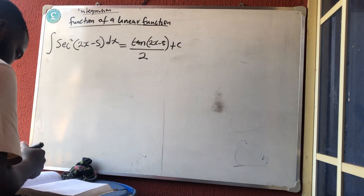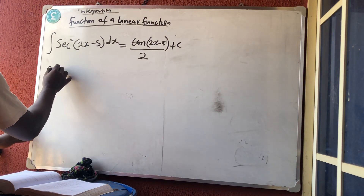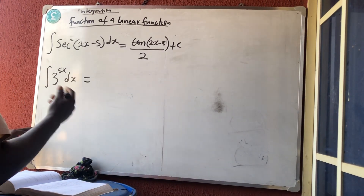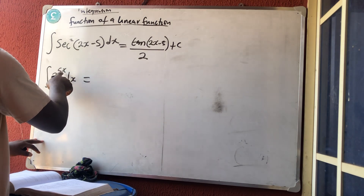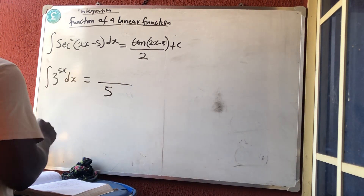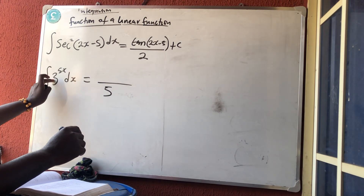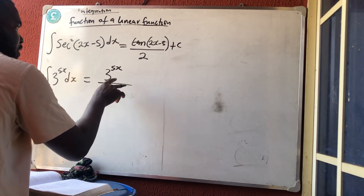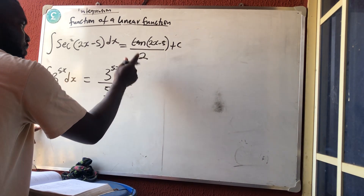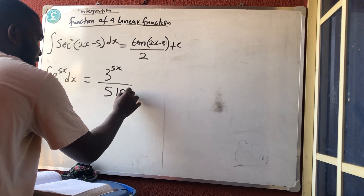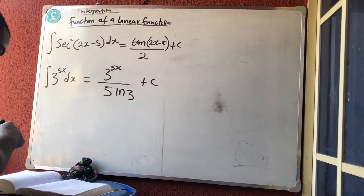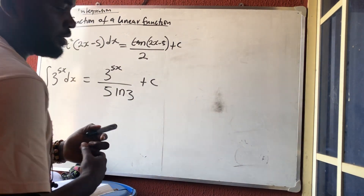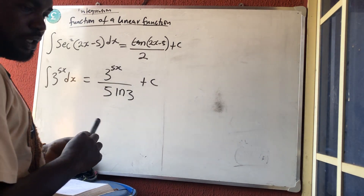Finally, the integral of 3 raised to power 5x dx. Normally it would be a straight power, but 5x is linear. Differentiate 5x: we get 5, kept at the denominator. The integral of a constant raised to a variable power is that constant raised to the same power divided by the natural log of that constant — so 3^(5x) divided by (5 · ln 3) — plus a constant. In our next video we will talk about special integration. Thank you very much.